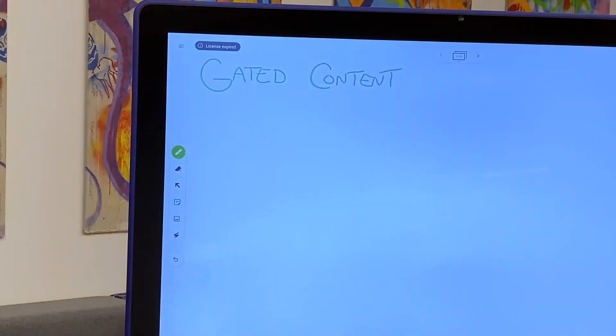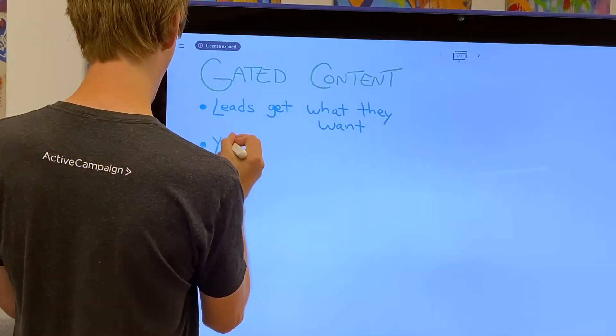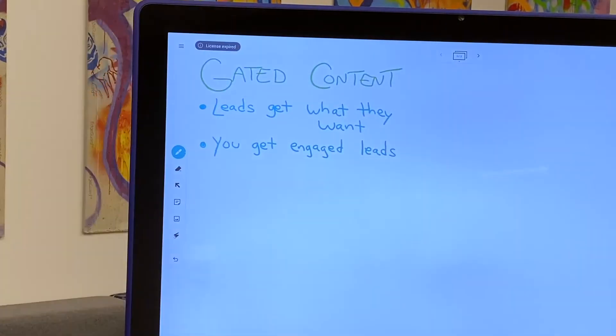What a great question. The answer to this question centers around two words, gated content. With gated content, your leads get the content they want, you get engaged leads that are more likely to convert, and to top it all off, this can all be fully automated.